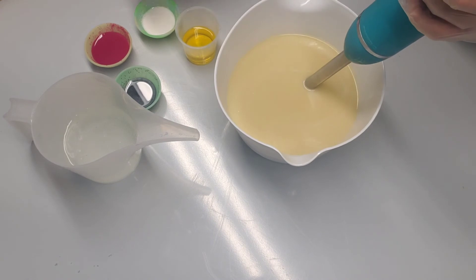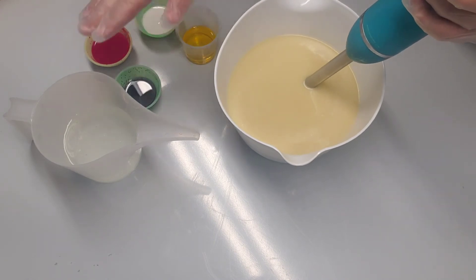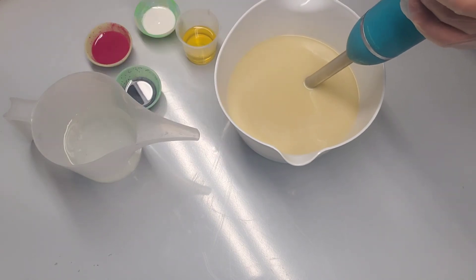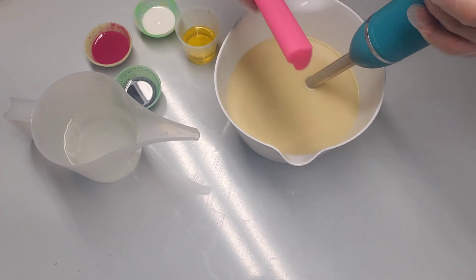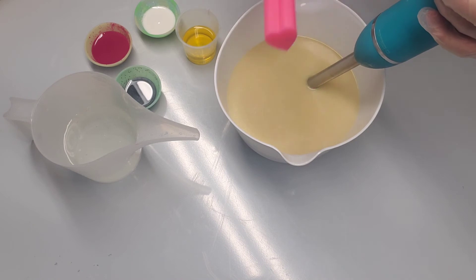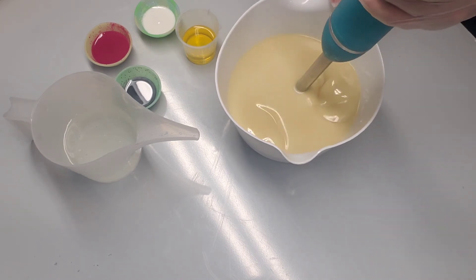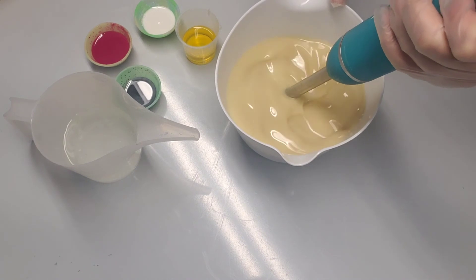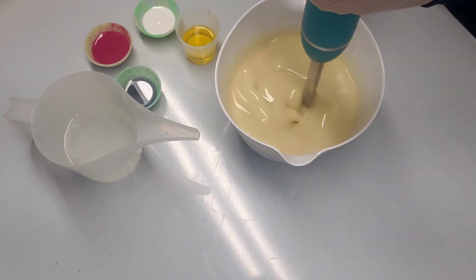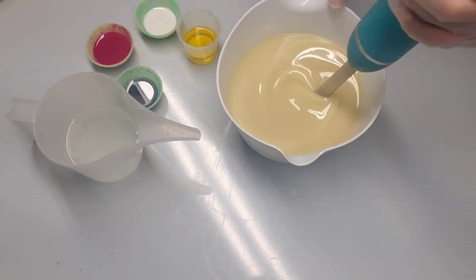Here we have the scent, the colors we'll be using in this design, and the lye water solution. I also have some heart embeds that I've prepared to put inside the soap. We'll be using two of these column molds - one going inside the soap and the other on top.